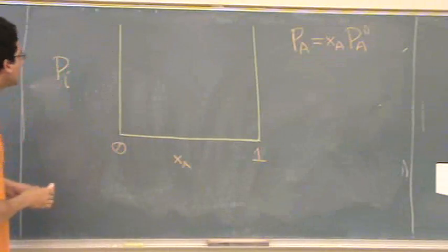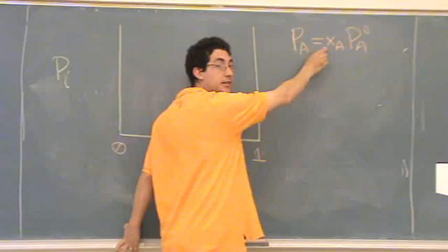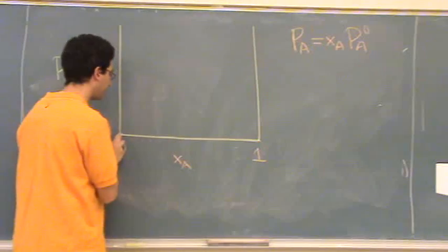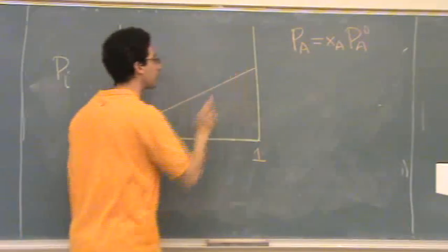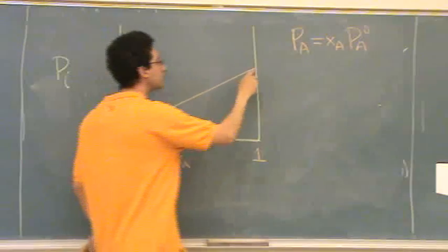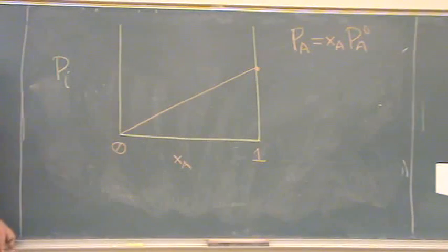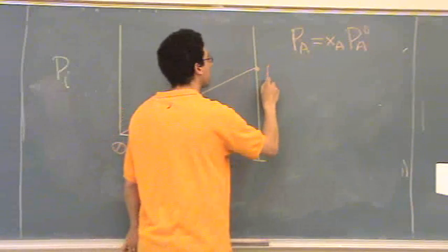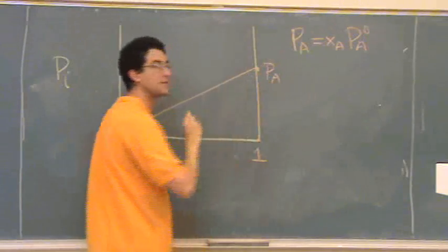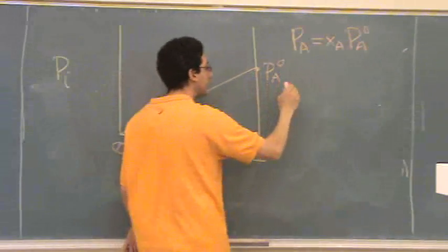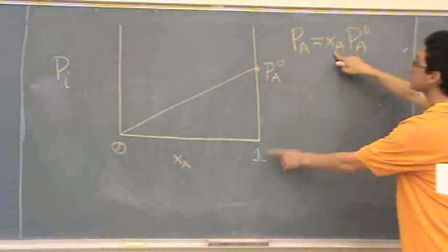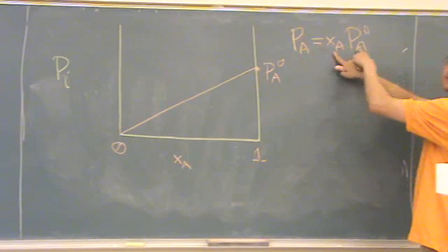Okay? So this one looks, it'd be a linear, because this is a linear function. Going up like that. What's this point right there in terms of pressure? Up here. PA naught. When XA is 1, PA equals PA naught.